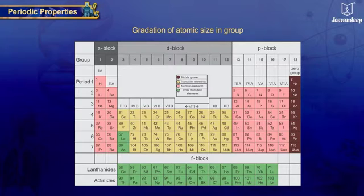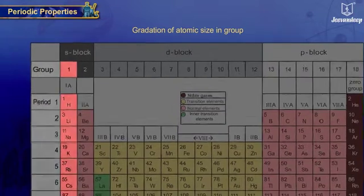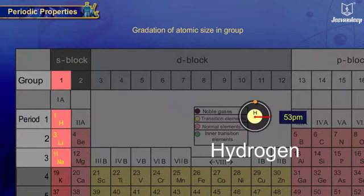Let us observe the gradation of atomic size in elements of the first group. Atomic radius of hydrogen is 53 picometers, lithium is 167 picometers, and sodium is 190 picometers.